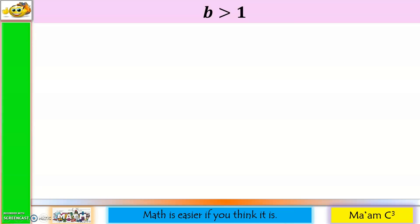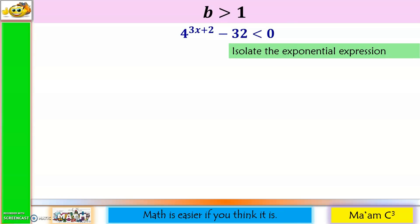Let us start with b greater than 1. We have 4 raised to 3x plus 2, minus 32, is less than 0. Step 1: isolate the exponential expression — we're going to move negative 32 to the other side.